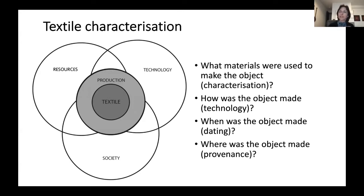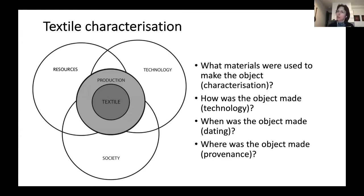By studying a textile, usually on a microscopic but also on a macroscopic level, we can characterize it by understanding what materials were used to make it. So it's the basic characterization: what fibers, what dyes, how was the object made. And Marika already mentioned a little bit about these different aspects — what different types of cloth there are, how they differ technologically based on how they were made on the loom.